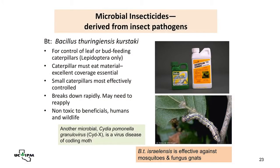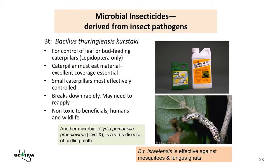Microbial insecticides are derived from insect pathogens and are naturally derived. The most widely known is Bacillus thuringiensis kurstaki (Btk) for caterpillars — the caterpillar has to eat it for it to work, and it's most effective against small caterpillars. It breaks down rapidly, so you may need to reapply — ideally just as caterpillar eggs are hatching. There is also Cydia pomonella granulosis virus (Cyd-X), effective against codling moth. And Bacillus thuringiensis israelensis is effective against mosquitoes and fungus gnats.